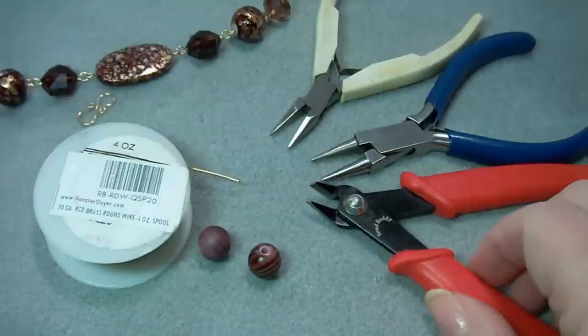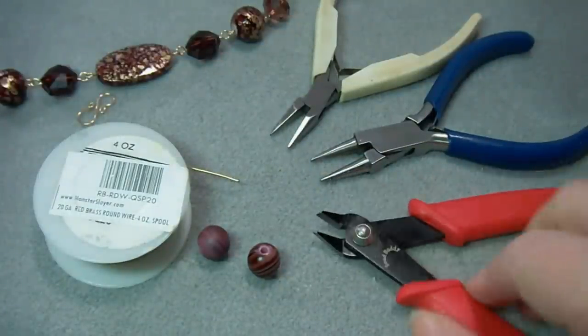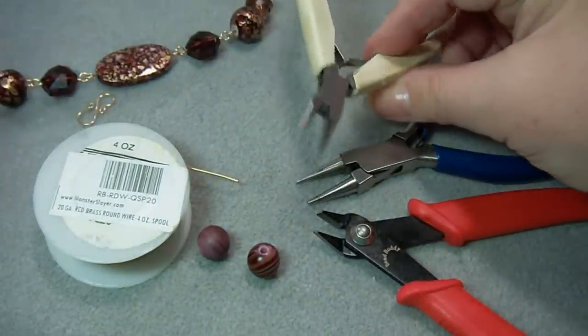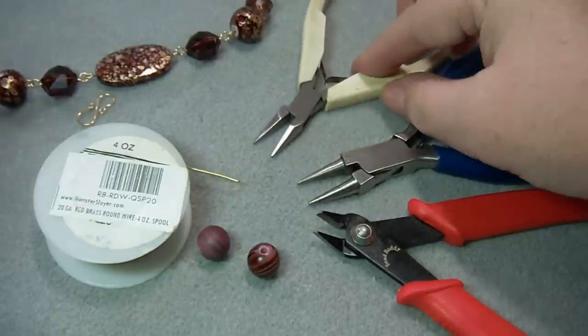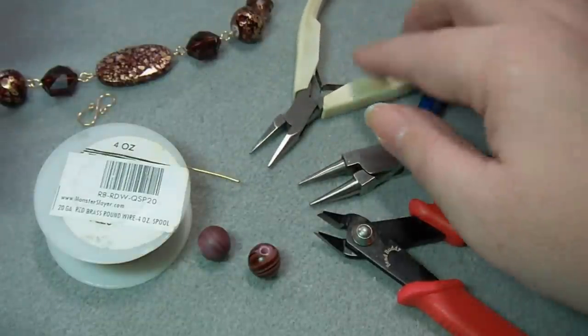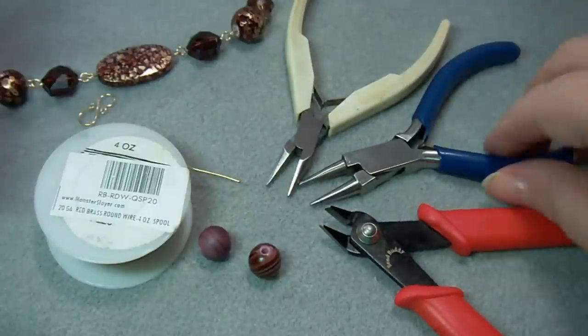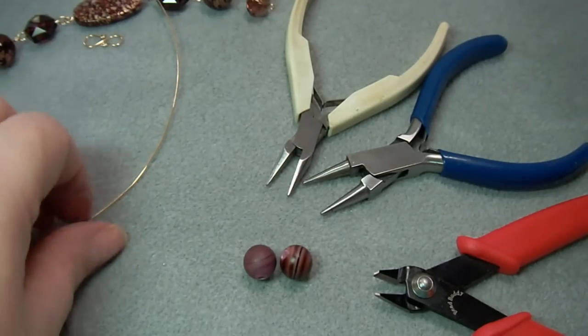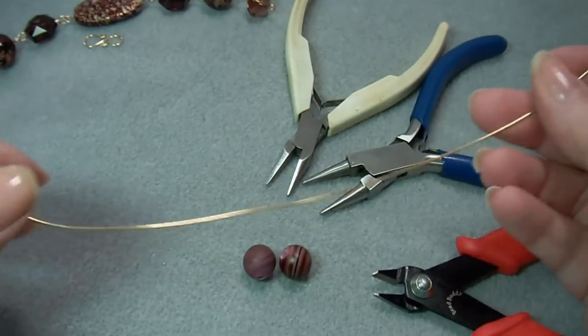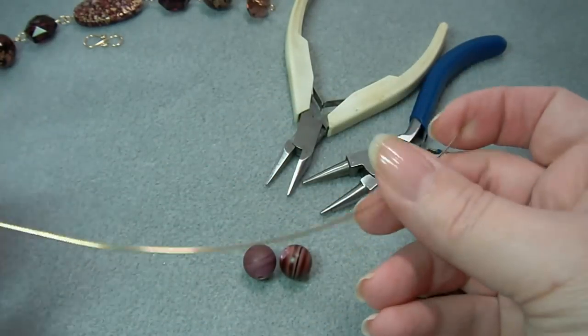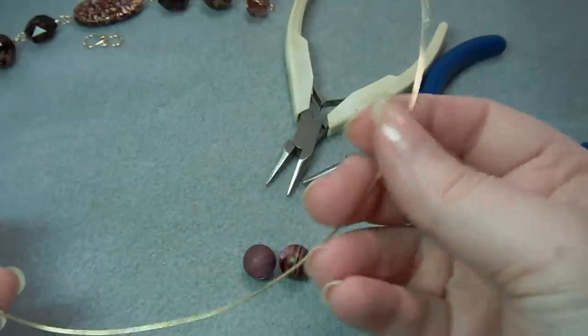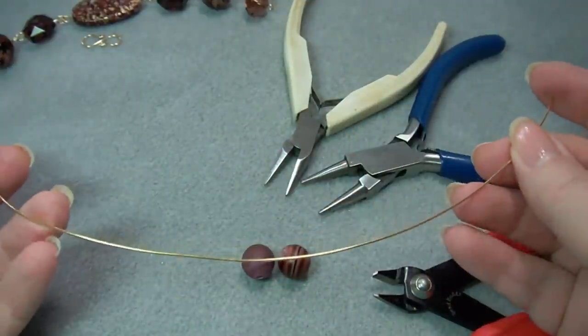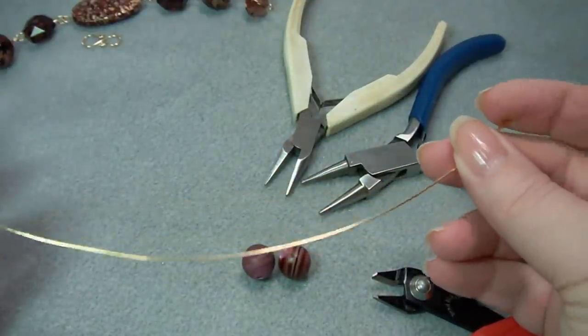So the beads, a pair of flush cutters, a pair of round nose pliers, and a pair of chain nose pliers. You could use a set of flat nose pliers if you like, but I'm using the chain nose because I happen to like them. I've cut off a piece of wire because I don't like to cut each one individually. I like to work off a longer piece because there's less waste this way.